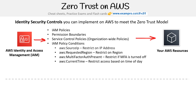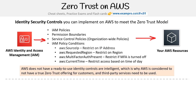Based on all these security controls to our AWS resources, we can kind of enforce the zero trust model. However, AWS does not have ready-to-use identity controls that are intelligent, which is why it was considered not to have a true zero trust offering for customers — third-party services need to be used. Technically, this means we can kind of do zero trust on AWS, but there's a lot of manual work.